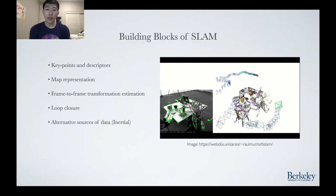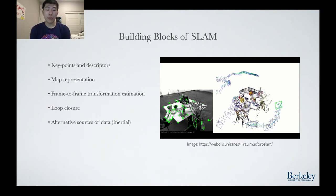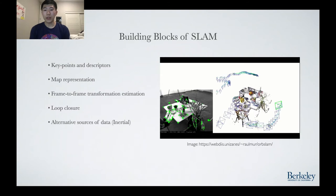Today we'll be talking about five building blocks of SLAM. First, key points and descriptors. Second, map representation — how SLAM stores the map of the world. Third, frame-to-frame transformation estimation — how do we estimate the pose of a camera frame given this map of the world. Four, loop closure. Five, alternative sources of data, such as inertial.